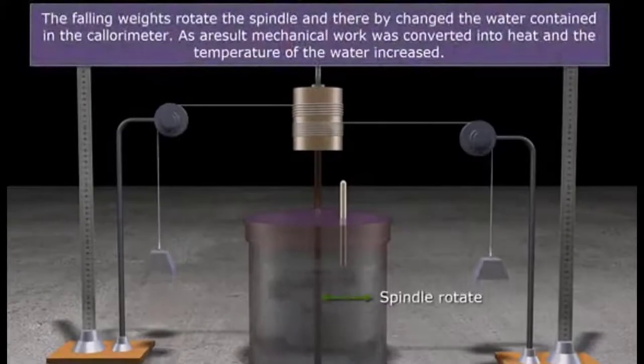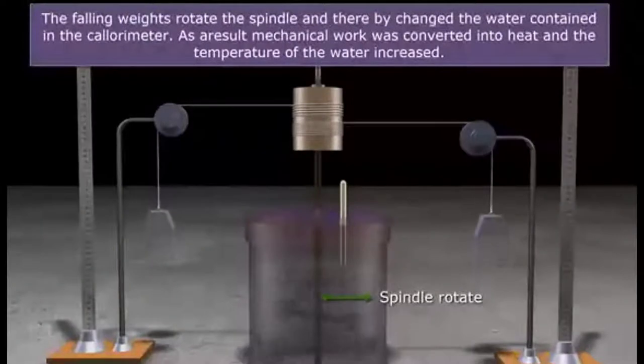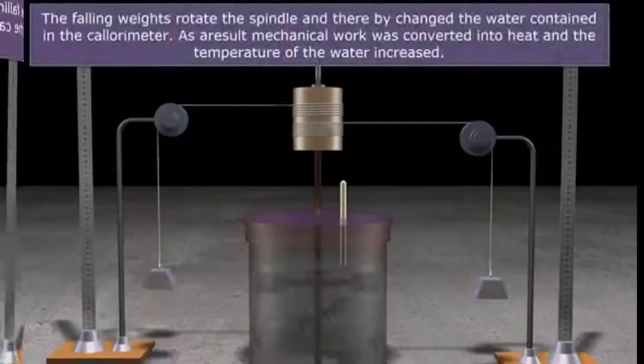In Joule's experiment, a falling weight drove a paddle that turned inside a bucket of water. The energy of the movement was changed into heat.